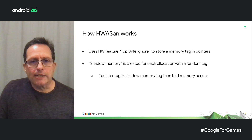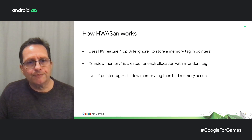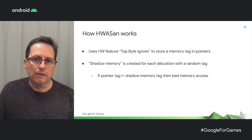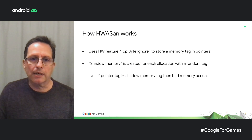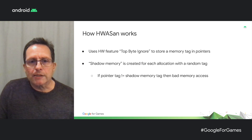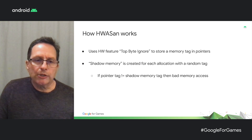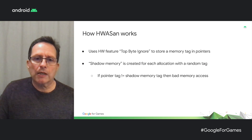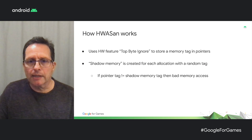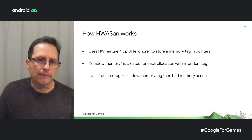Here is how Hardware ASAN works. It uses the top byte ignore feature of the ARM64 architecture to store a memory tag in the pointer. It also creates a shadow memory to map allocations to a unique tag. If the pointer tag doesn't match the shadow memory tag, then it knows the pointer is bad.